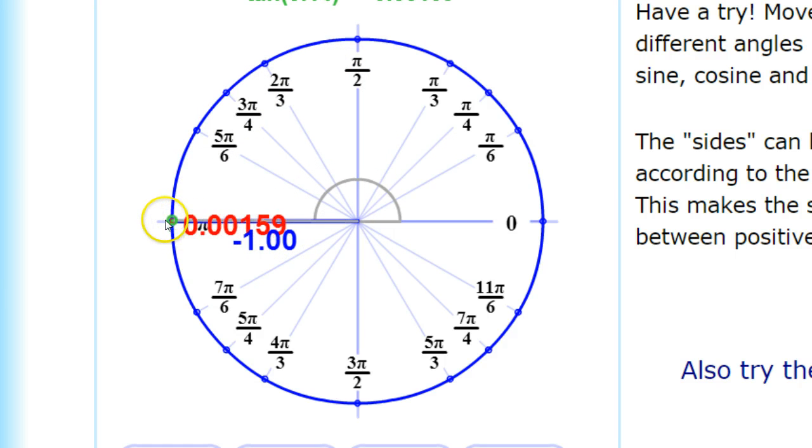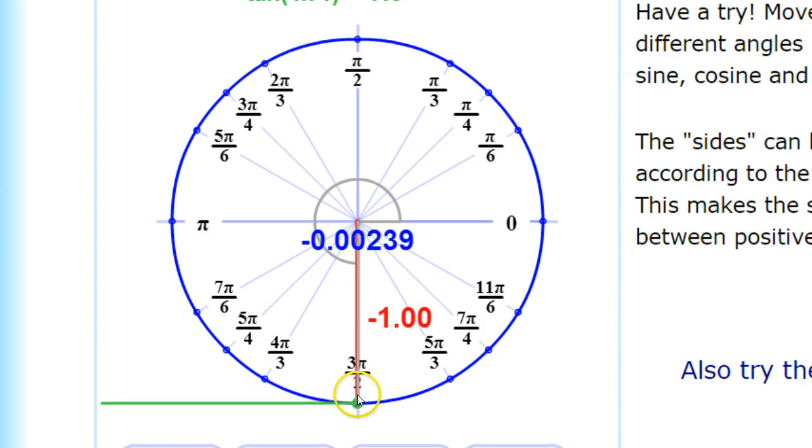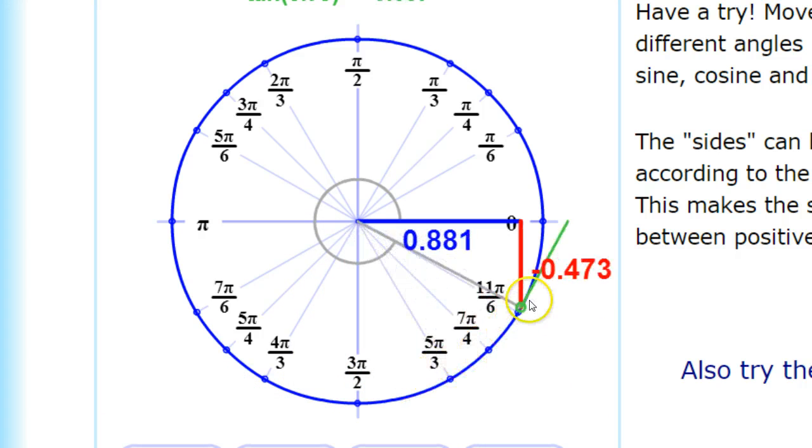And it gets to right here and this is going to be at point zero, which is also the same as pi or 180 degrees, and then we start to go around to the bottom to negative one at three pi halves.